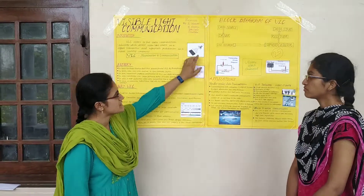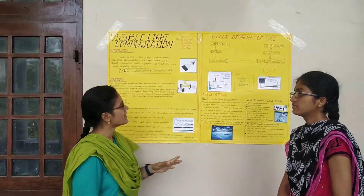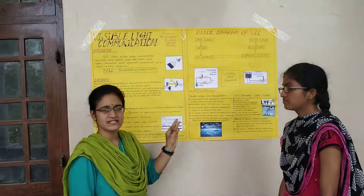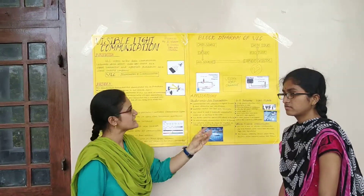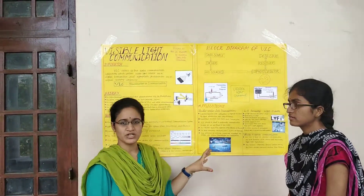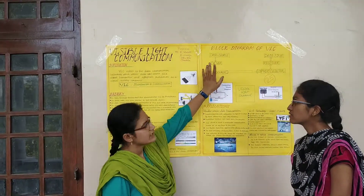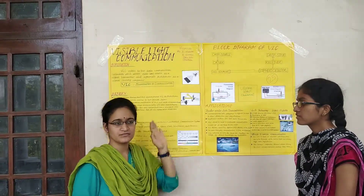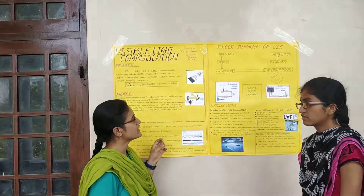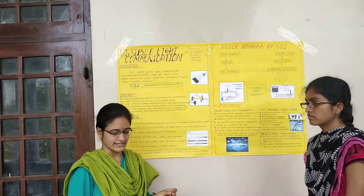In the visible light communication block diagram, we have three sections: the transmitter section, the receiver section, and the visible light communication channel. In the transmitter section we have a data source, a light source, and a modulator.